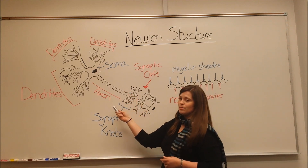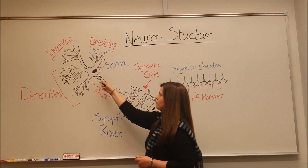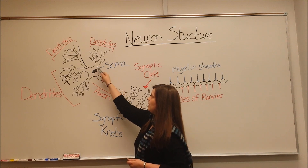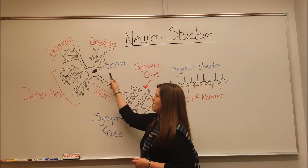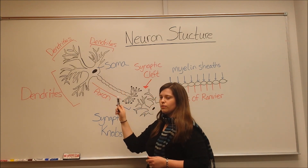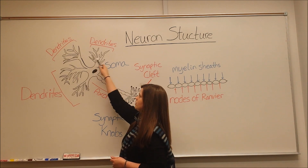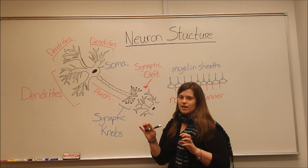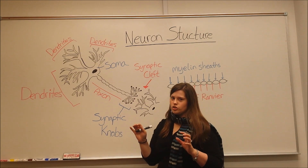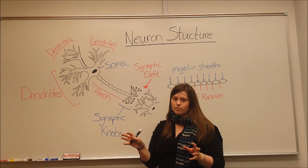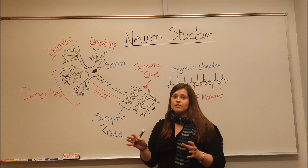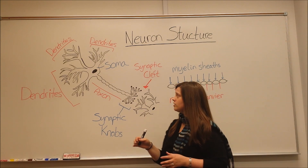Here's an example of a neuron. Here we have the nucleus in black and the soma, or cell body. And you can see that branching out of one side of the soma are multiple dendrites. These are like fingers — they allow the neuron to reach out into its environment and receive signals from other cells.